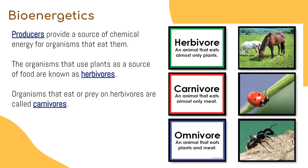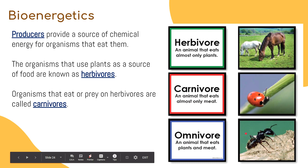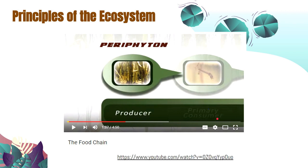To remember the ecological roles of organisms in an ecosystem: plants are mostly considered producers because they bring in solar energy into the ecosystem. Organisms that use plants as a source of food are known as herbivores. Organisms that eat or prey on herbivores are called carnivores. Omnivores are animals that eat both plants and meat.